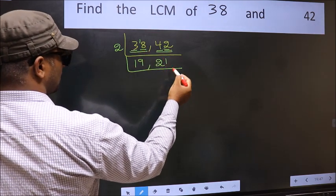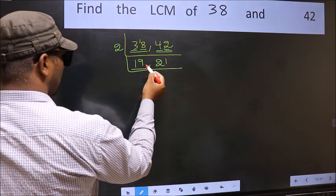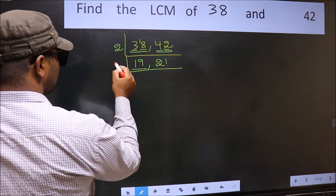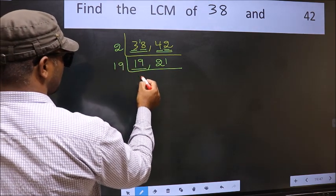Now here we have 19. 19 is a prime number, so 19×1=19.